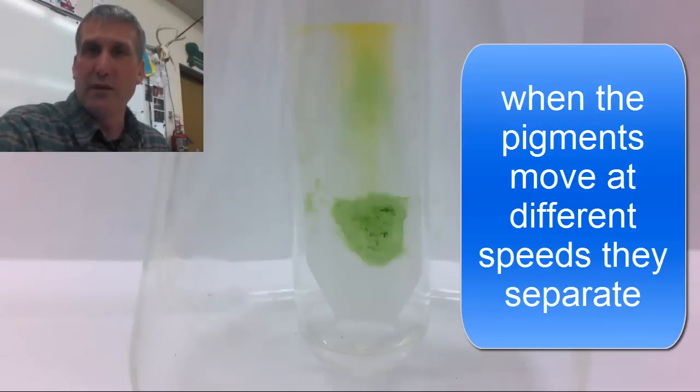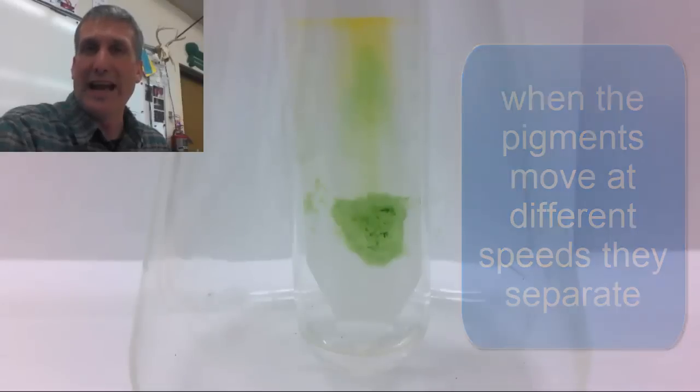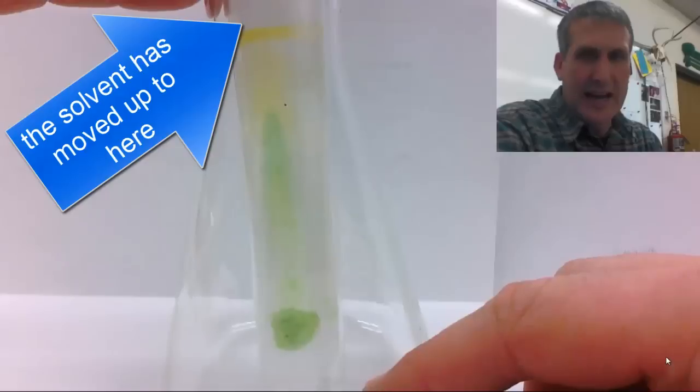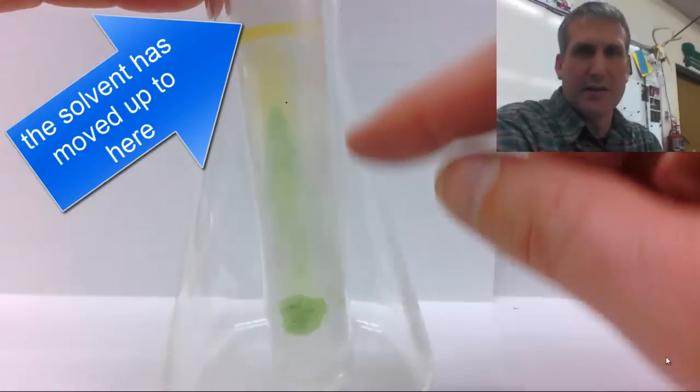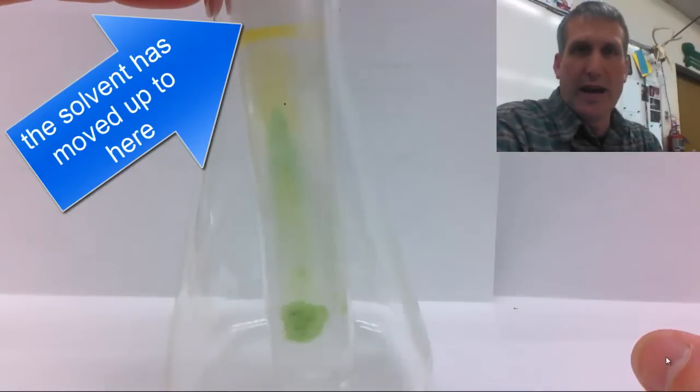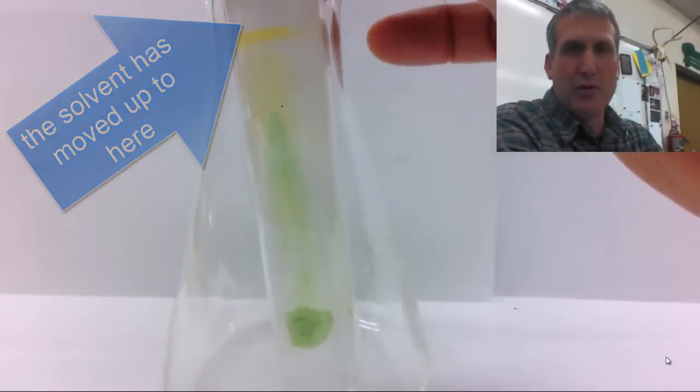Just like in a running race when all the runners start at the same point at the beginning, during the race they spread out because they are moving at different rates. The last thing you want to do is allow the chromatography solvent to move up the paper until it's three quarters or more of the way up. Then you have to remove the paper or else the solvent will continue to move up and pull all the pigment up to the top.